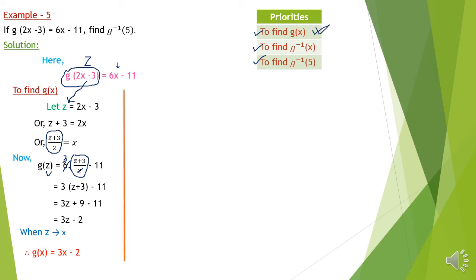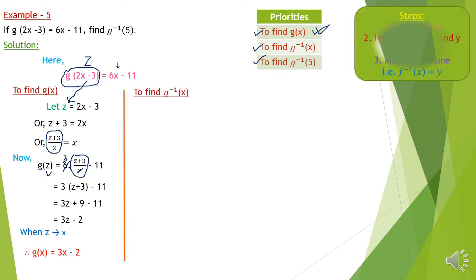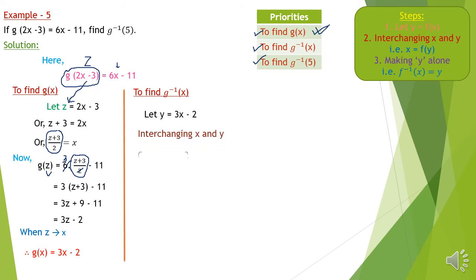To find g⁻¹(x), following all three steps shown on the top right corner: let y = g(x) = 3x−2. We cannot suppose y = 6x−11 because that is g(2x−3), not g(x). Now interchanging x and y: x = 3y−2. Making y alone: x+2 = 3y, so y = (x+2)/3. Therefore g⁻¹(x) = (x+2)/3.